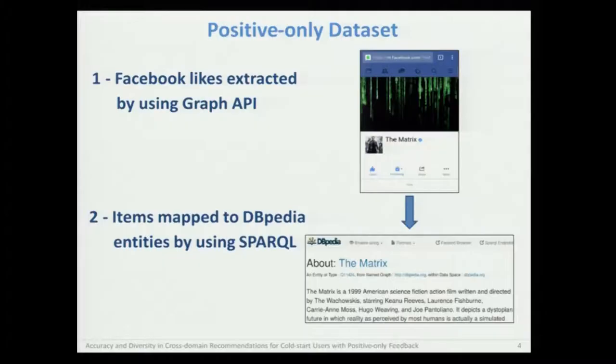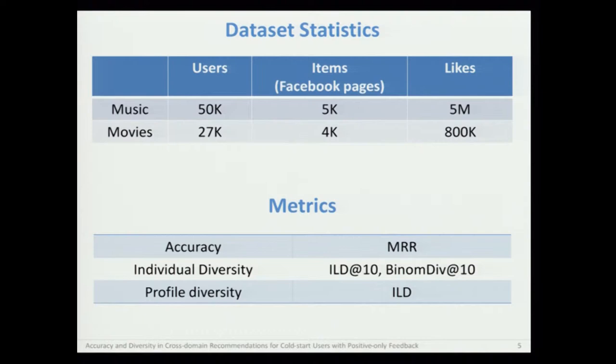In order to evaluate the different methods in the positive-only feedback scenario, we collected Facebook likes using the Facebook Graph API, and then we mapped such items to the corresponding DBpedia entities using SPARQL queries on the name and type of the items. DBpedia is useful during the evaluation to compute the content-based diversity. Overall, the dataset contains 5 million likes in the music domain and 800,000 in the movie domain.